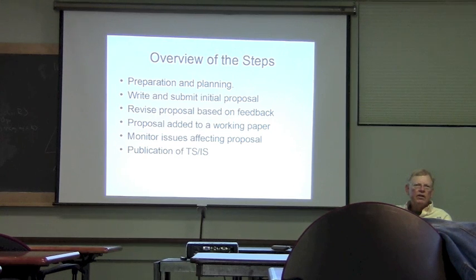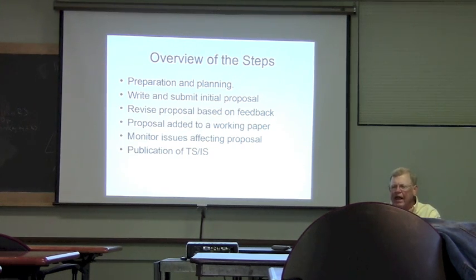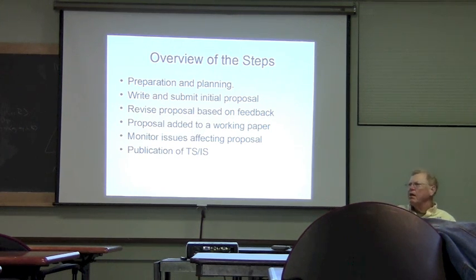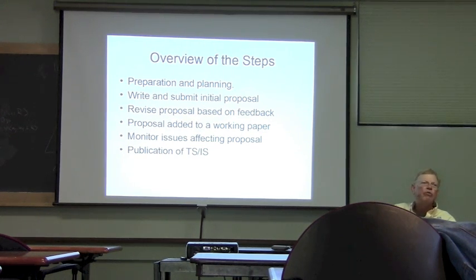In practice what happens after acceptance is that some people save themselves trouble by not reading anything until it goes into the working paper, and then they start shooting at it. So you want to monitor the issues list. Once it's in the working paper, the only way to change it - even the library author can't change it directly - is to submit an issue on the issues list describing the problem and the proposed fix. A lot of changes are minor editorial-level fixes, like cross-referencing an existing requirement table.